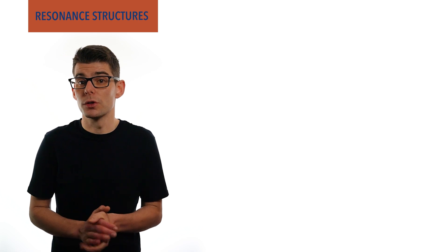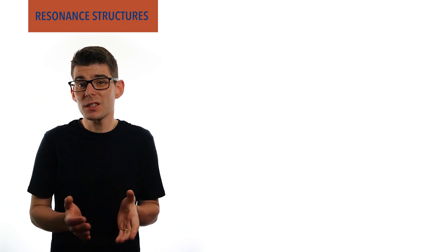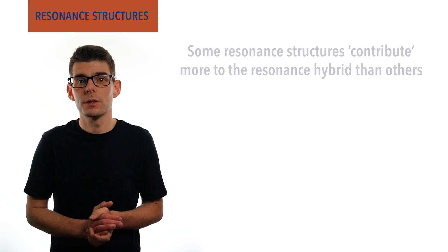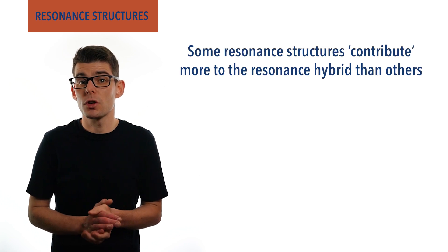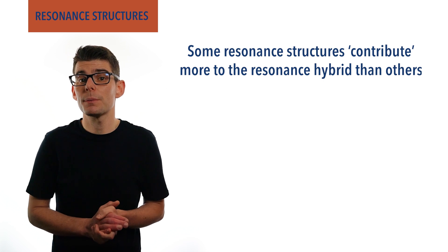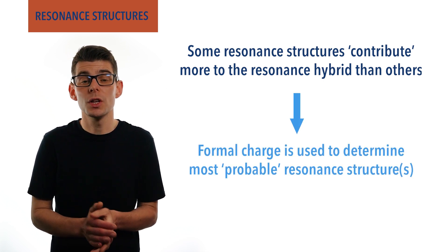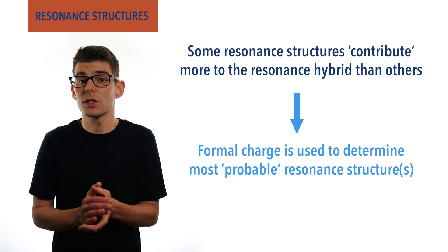Whilst all resonance structures contribute to the real structure of a molecule or ion, some are more probable than others. To identify the structure that contributes most to the resonance hybrid, we use a concept called formal charge, which helps us determine the configuration with the lowest possible charges on each atom.